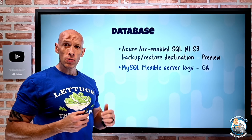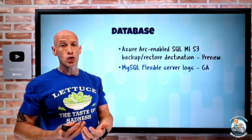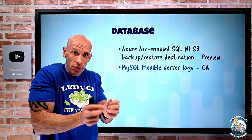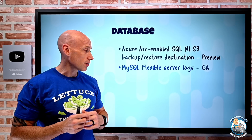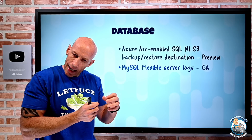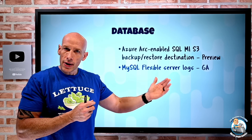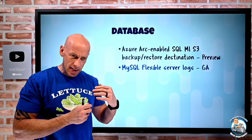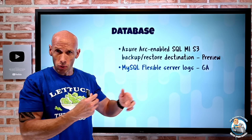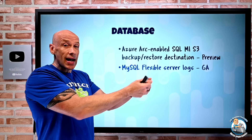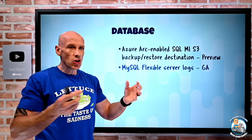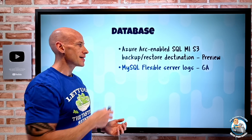MySQL Flexible Server — which is based on virtual machines, so you can stop/start, use Burstable tiers, have highly available configurations, and have fine-grained control of database configuration attributes — now has server logs. You can turn on selected logs, and it keeps up to seven gigabytes of data free with a 24-hour rolling window, deleting anything older than 24 hours. You can then download the log file from the portal or other interfaces to view the data for troubleshooting. This feature is now GA.